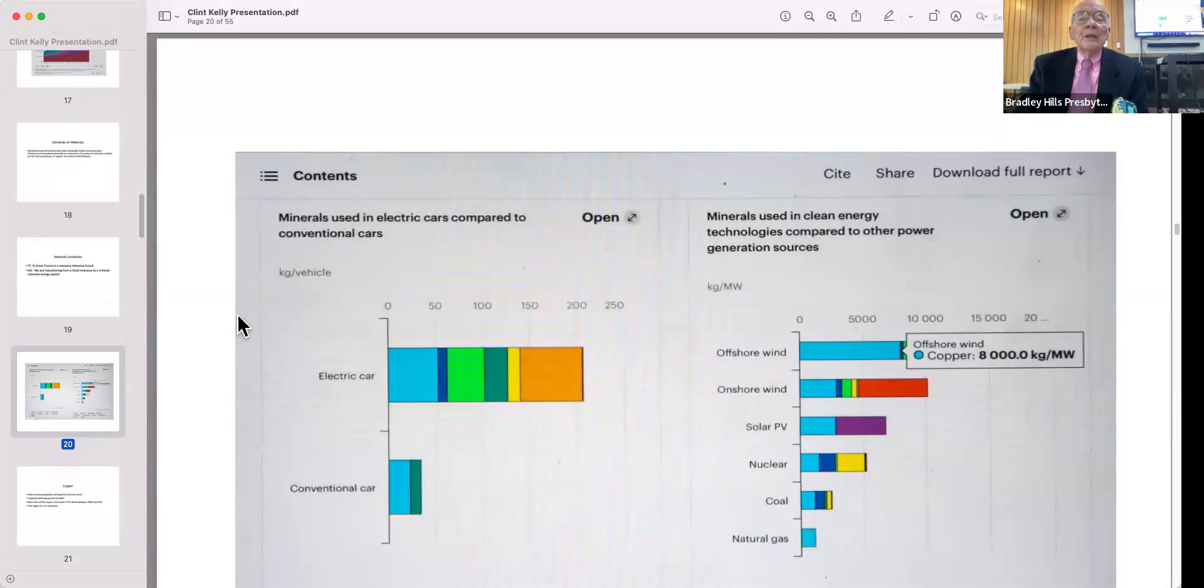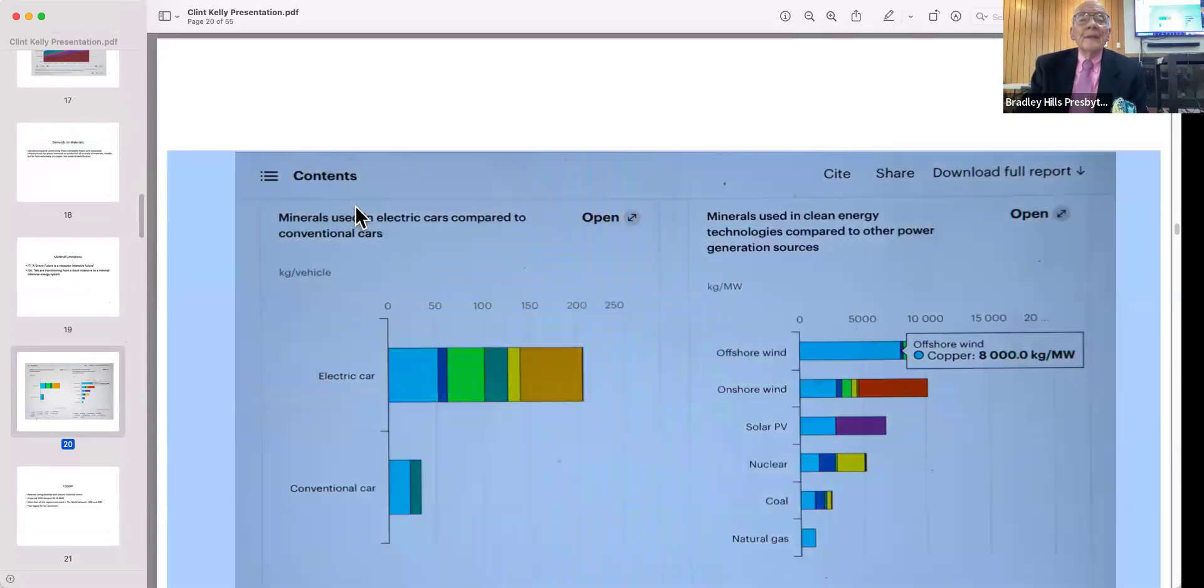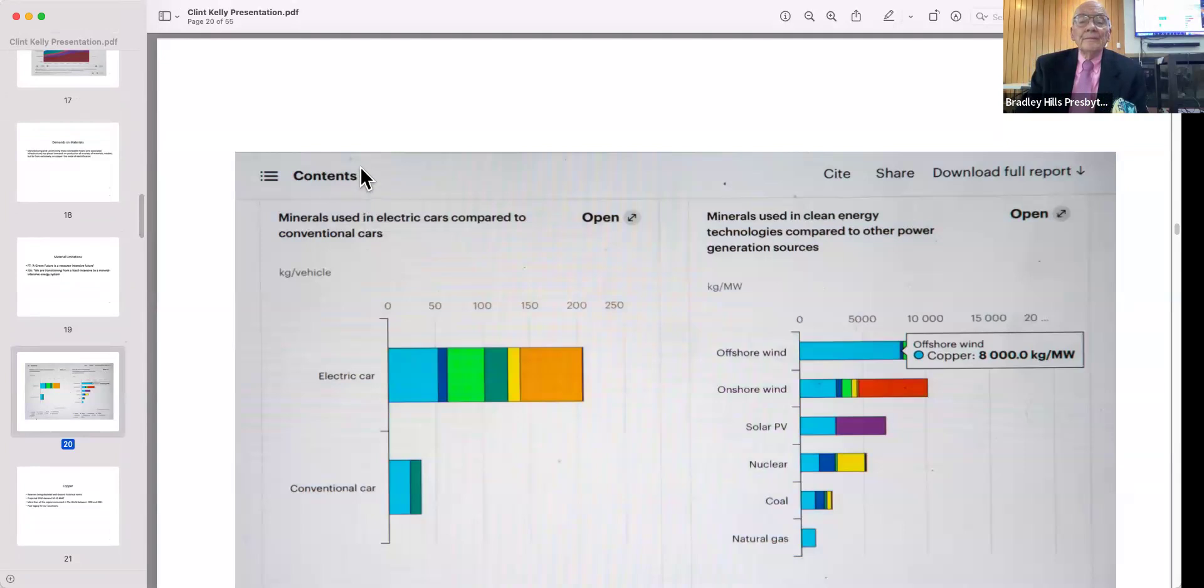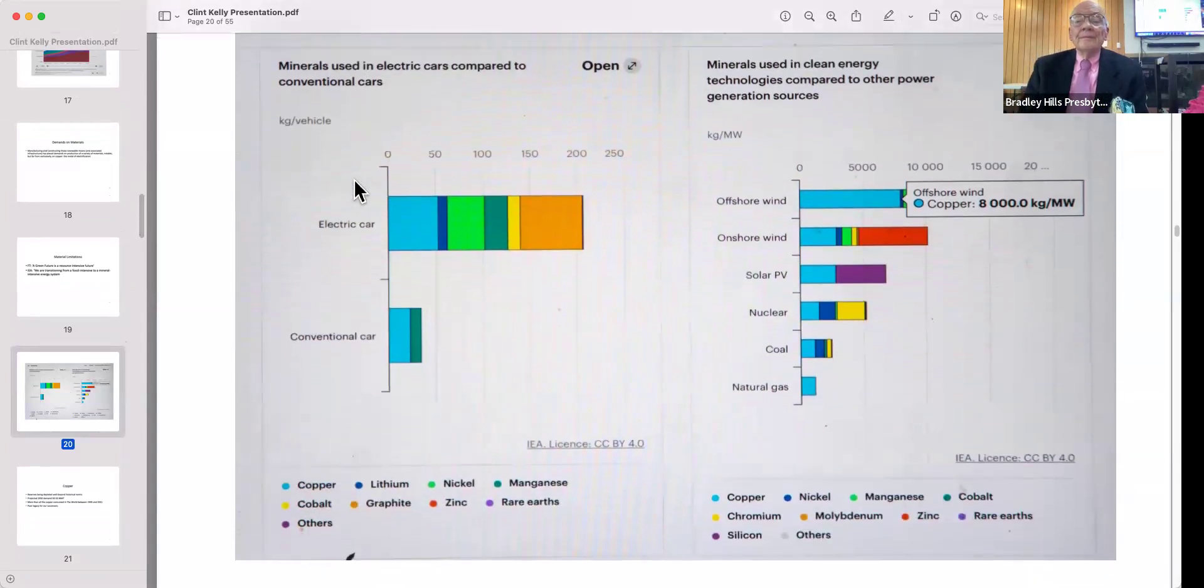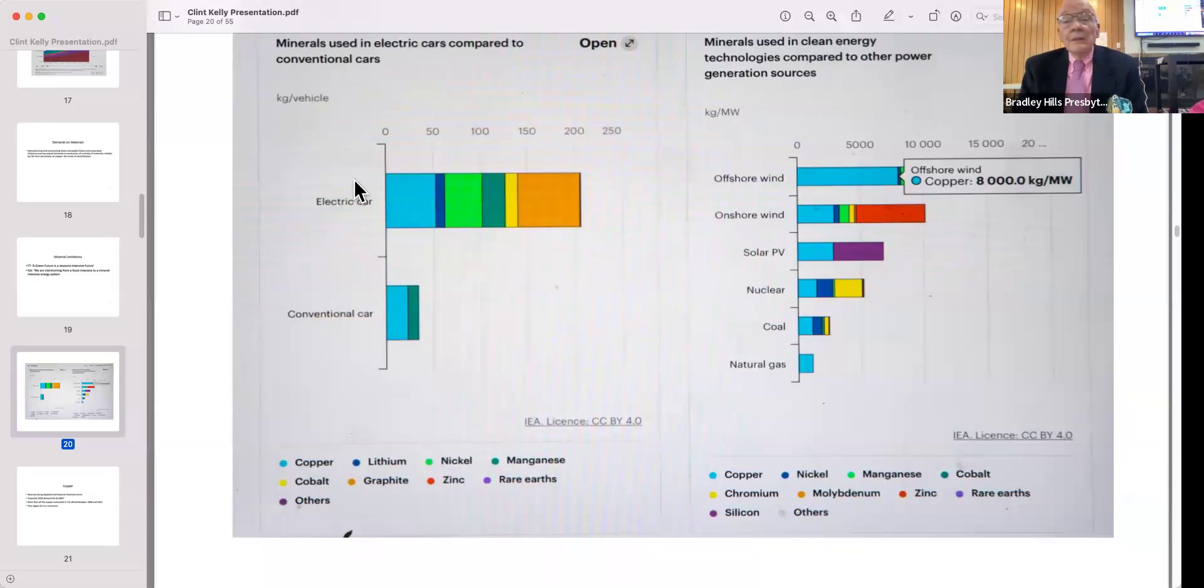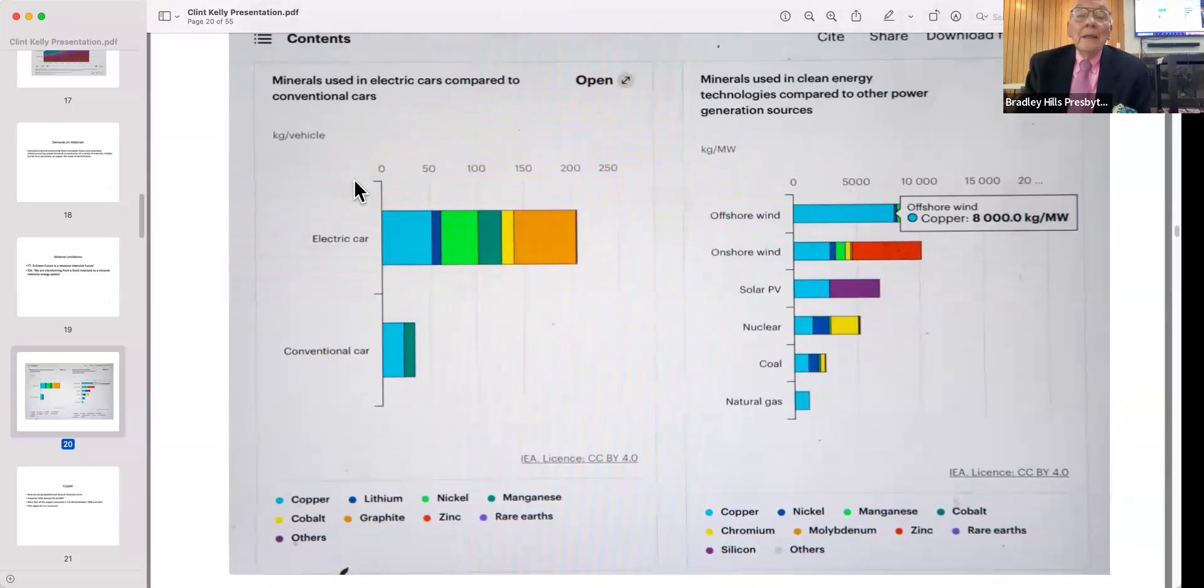This chart gives you some idea of the resource intensive nature. At the top you see the minerals that are used in an electric car—it's an average, some use fewer, some more. At the bottom you see the use of particularly copper, which is in blue, in a conventional car. It's about a factor of 10. I have an electric car, an Audi e-tron.